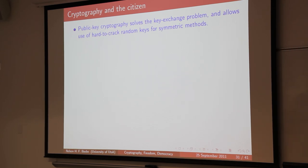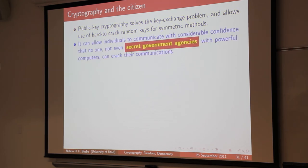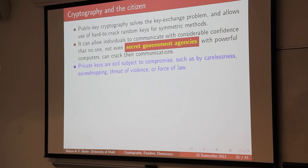What does this have to do with citizens? Public key cryptography solves the key exchange problem and lets you transmit very hard-to-crack keys for symmetric methods. It allows individuals to communicate with reasonable confidence that even the NSA can't read what they're writing. Of course, keys are subject to compromise — you might post your key on a bulletin board beside your computer because it's long and you can't remember it. Keys can be gotten by eavesdropping, or someone can put a gun to your head, or simply say they'll send you to prison unless you give up your key — that's the usual technique many governments take, and it's pretty effective.